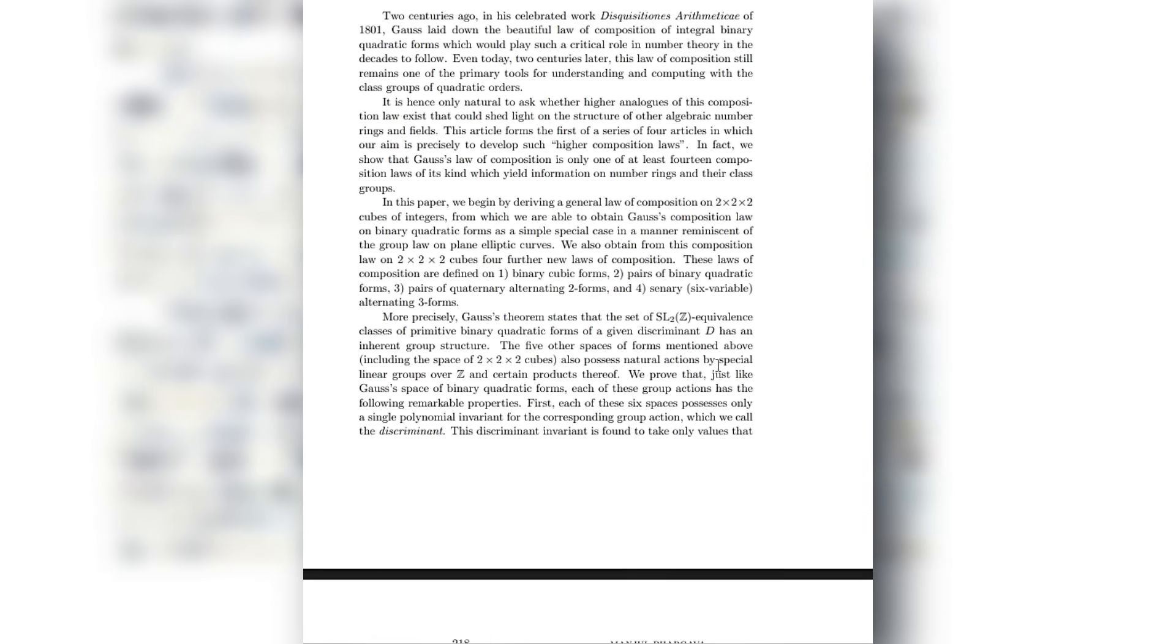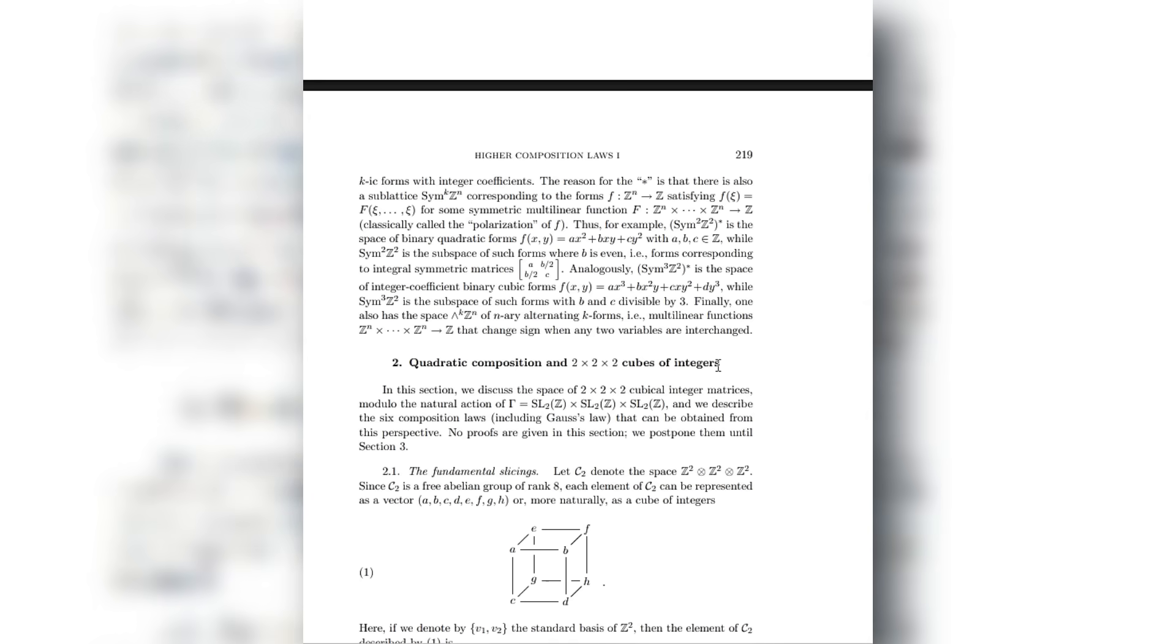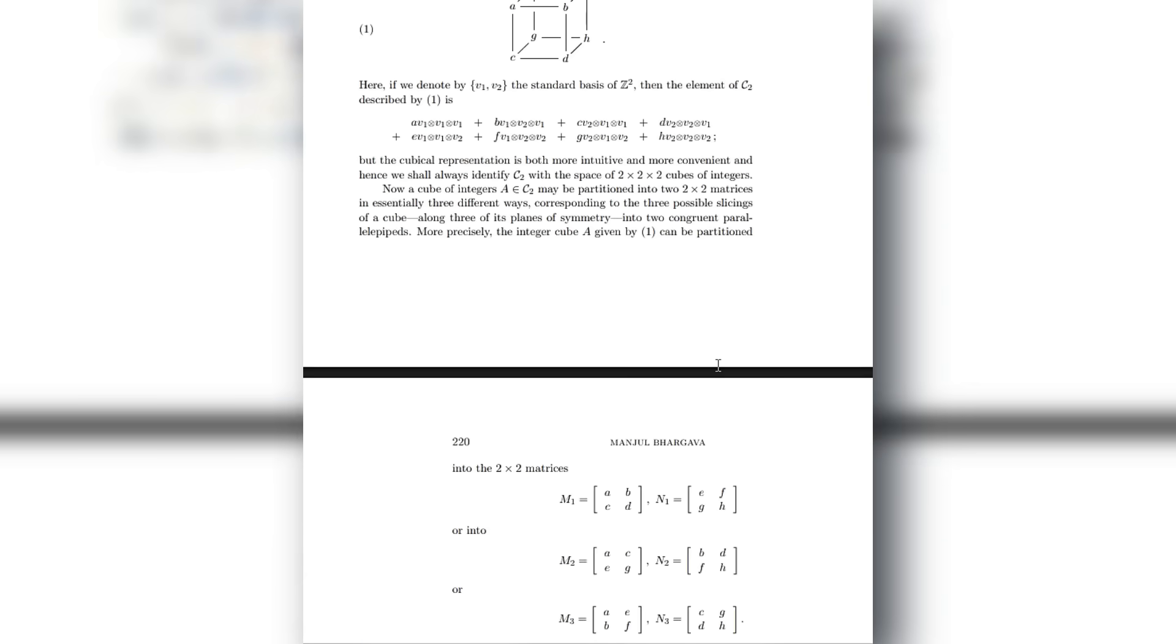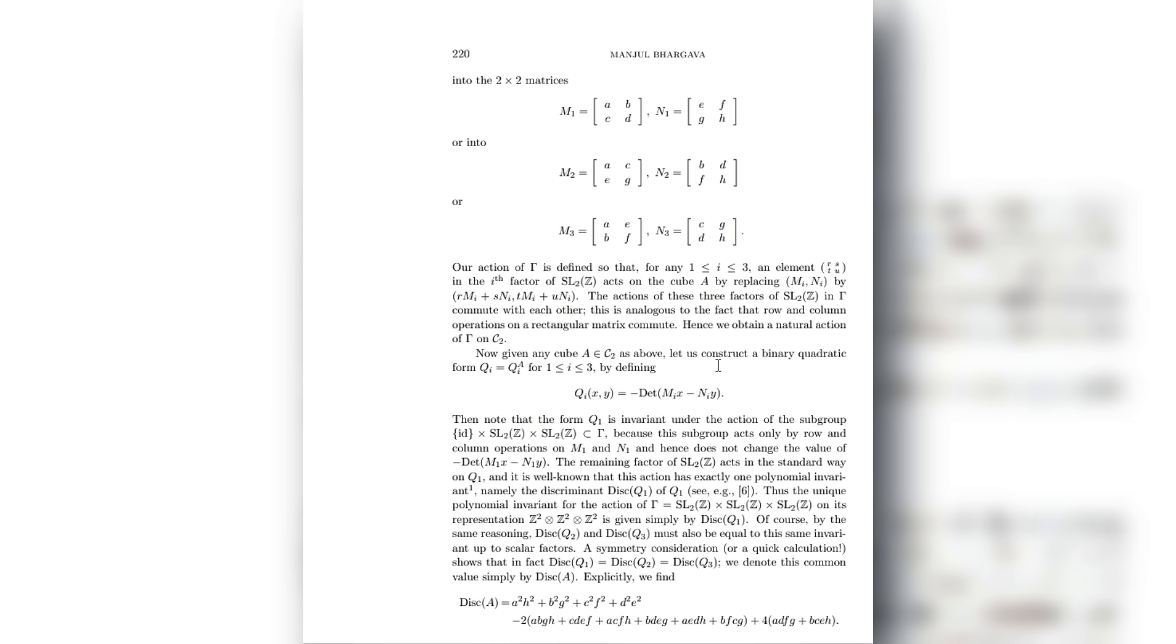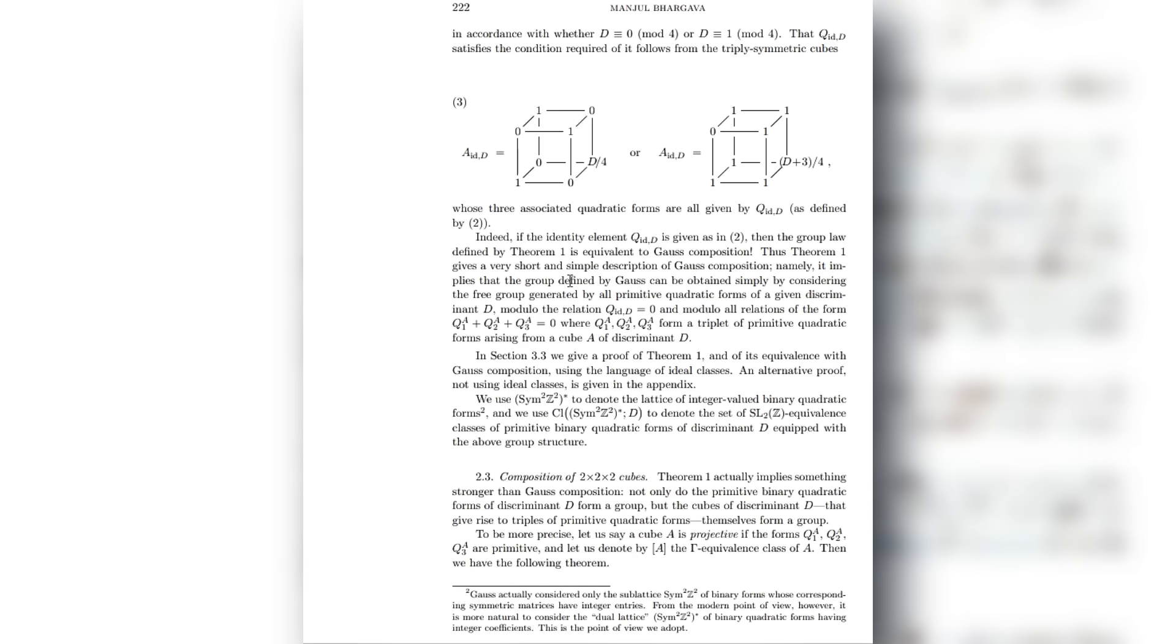His doctoral thesis unveils a new universe of ideas, higher composition laws, a concept so strange, so fresh, and so powerful that the number theory community pauses and stares. With one thesis, a 27-year-old PhD student resurrects a chain of mathematical thought stretching back to Gauss, and extends it in directions no one had anticipated. It is the kind of thesis that doesn't just graduate you. It announces you.